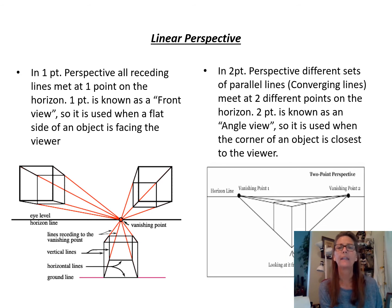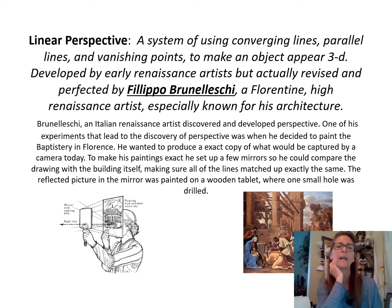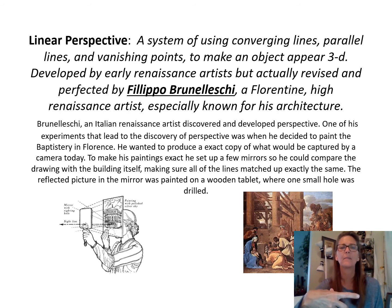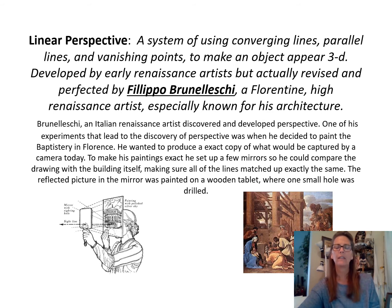With two-point linear perspective you have two vanishing points and you see things at an angle — not a straight-on view. Because of that, things disappear in two different directions. Bruno Brunelleschi of Florence was the one during the Renaissance who paid close attention to perspective. Instead of flat-looking buildings, things started to look more realistic in paintings, drawings, and carvings because he used the vanishing point and had things looking like they were disappearing into the distance.